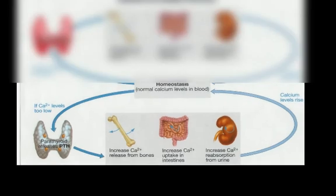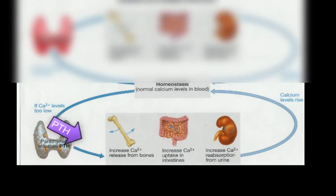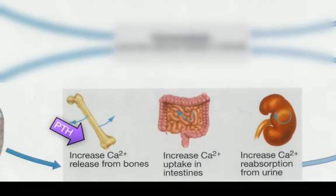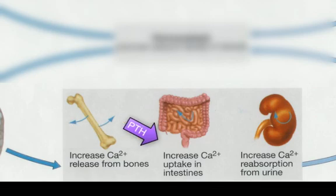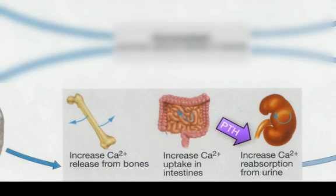If blood calcium levels are too low, the parathyroid glands go into action by secreting parathyroid hormone, or PTH for short. The effect of PTH in bones is for osteoclasts to dissolve the mineral matrix and release the minerals into the bloodstream. The digestive system is stimulated to absorb more calcium and other minerals from the diet, and the kidneys are stimulated to keep from excreting calcium into your urine.